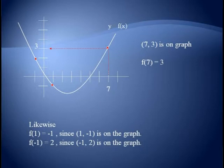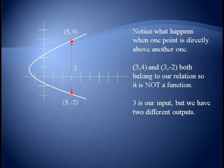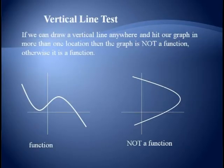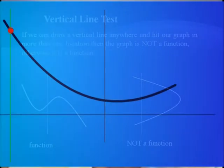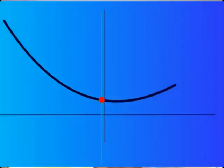Notice this tells us that the domain will be found on the x-axis and the range is on the y-axis. Now notice what happens when one point is directly above another point. In this case, we see that (3, 4) and (3, −2) both belong to our set of ordered pairs, which means that this graph is not a function. Again, we have an input of 3, but two different output values. This gives us what is known as the vertical line test. This says if we can draw a vertical line anywhere and hit our graph in more than one location, then the graph is not a function. Otherwise, it is a function.